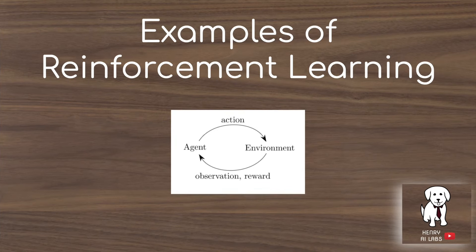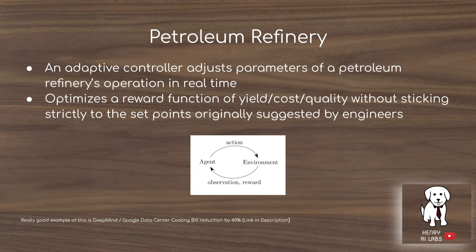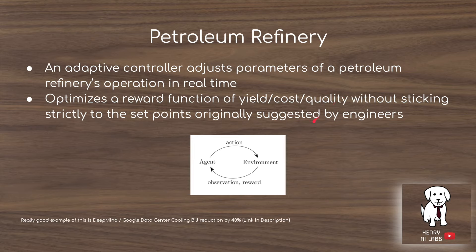Some examples of reinforcement learning, relating them back to the framework of agents sending actions to the environment and receiving back a new state and reward: In chess, a move is informed by planning and judgment of particular positions. The agent sends an action of where to place a chess piece and receives the reward — usually zero until the end of the game — plus the next state when the opponent makes its move. In a petroleum refinery, an adaptive controller adjusts parameters to optimize a reward function of yield, cost, and quality, controlling different levers and receiving this reward based on how much it's producing according to the design of the reward function.